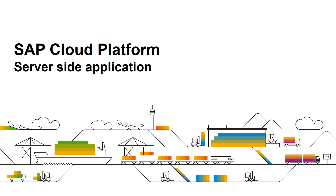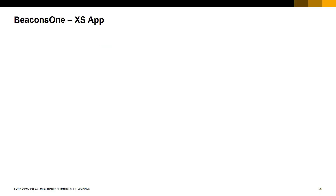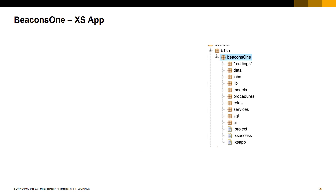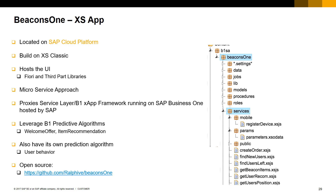Let's now have a look at the backend server-side application running on SCP. Our application is running in SCP as a HANA XS Classic application. This application proxies SAP Business One XApp Framework and SAP Business One Service Layer running on SAP Business One hosted by SAP. It leverages SAP Business One predictive algorithms — welcome offer and item recommendation — to produce welcome offers based on the customer's SAP Business One buying history, and item recommendations based on both predictive algorithms and customer behavior. It also offers a set of services consumed by the mobile application, such as registered device and create order, as well as services consumed by the heatmap. This application also hosts the heatmap UI.